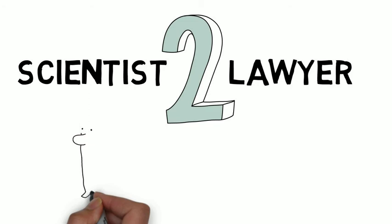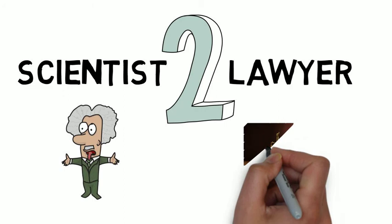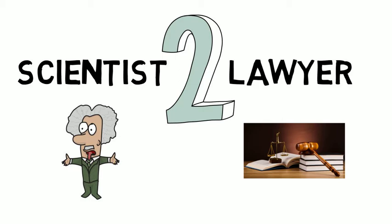Scientists gather evidence, they look for patterns, form theories, and then test them. Lawyers begin with a conclusion that they want to convince others of and then they look for evidence that supports it while also attempting to discredit any evidence that doesn't.